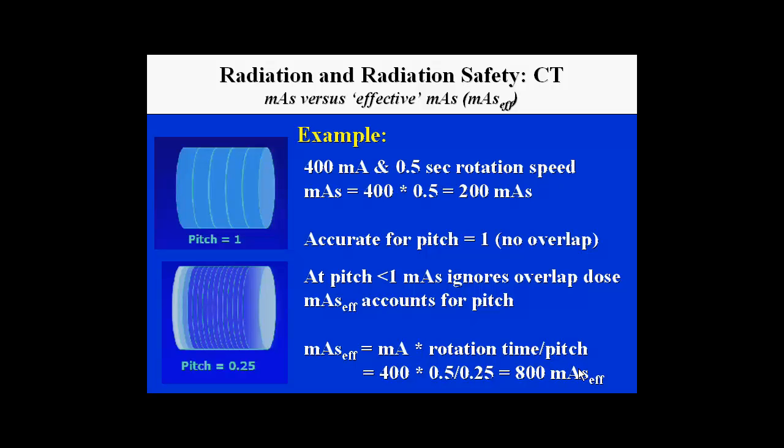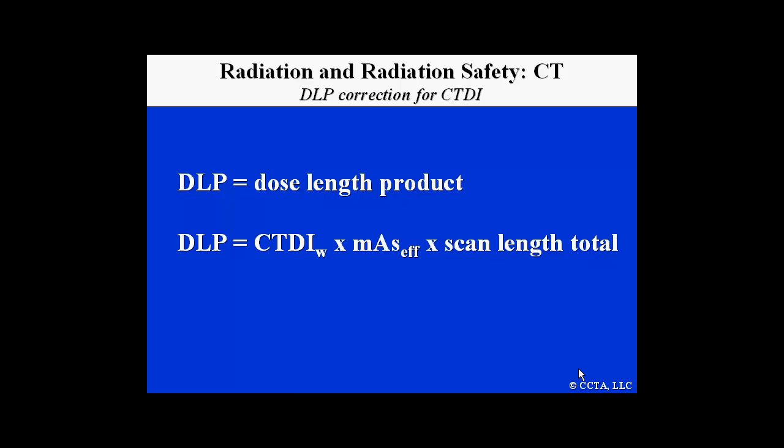Therefore, when we go to a pitch one-quarter the standard pitch, we increase the radiation dose significantly. The other important consideration is not only the dose within a particular area, but the length of the scan. This produces something called the dose length product, which uses the CTDI result and the mAs effective, multiplied by the total scan length.